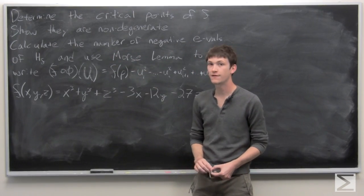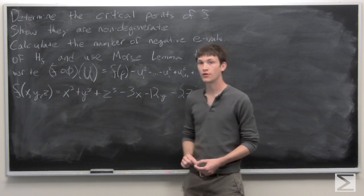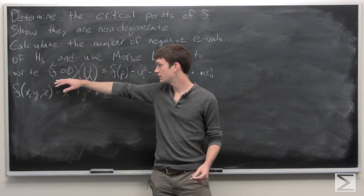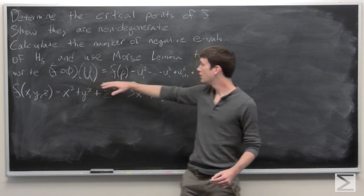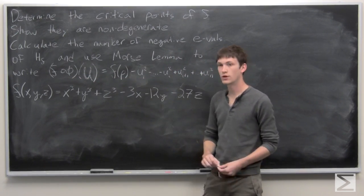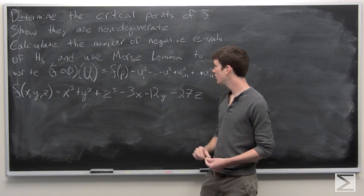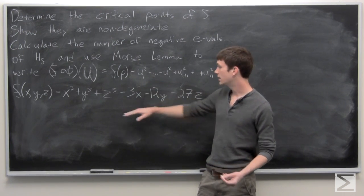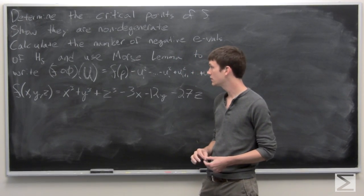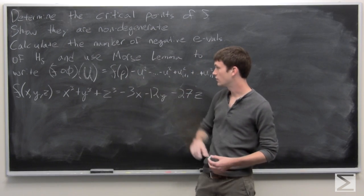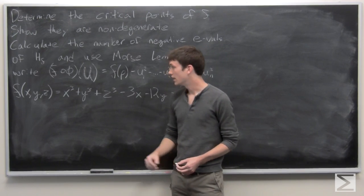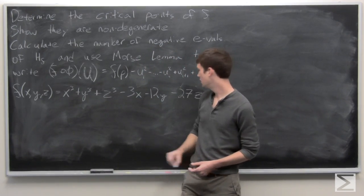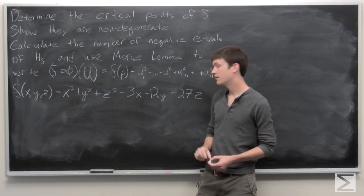In this problem, we're asked to determine the critical points of f, show that they are non-degenerate, calculate the number of negative eigenvalues of our Hessian matrix, and use Morse lemma to write f after a change of coordinates as f composed of phi of u, equal to f of p minus u₁ squared minus ... minus uᵢ squared plus uᵢ₊₁ squared plus ... plus uₙ squared. In this case n will be 3, and we're given that our function f(x, y, z) = x³ + y³ + z³ − 3x − 12y − 27z.